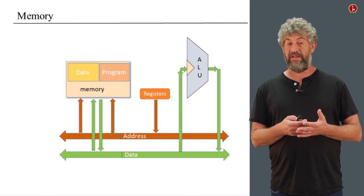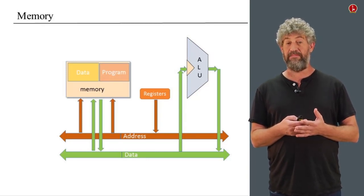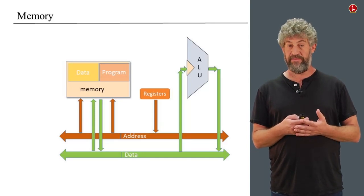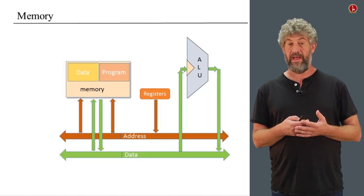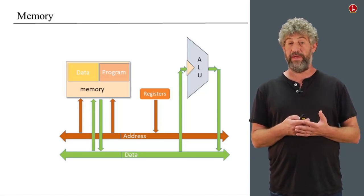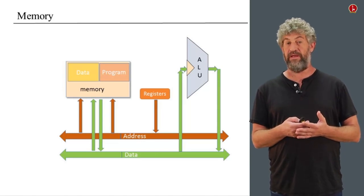The last piece we need to talk about is the memory. We always need to specify what address of the memory we are going to be working with, and that is specified by the address bus. And of course, once we work with a certain address, we need to be able to read it or write into it — get information from it or put information into it. So the input and output of the memory unit will have to be connected to the data bus.